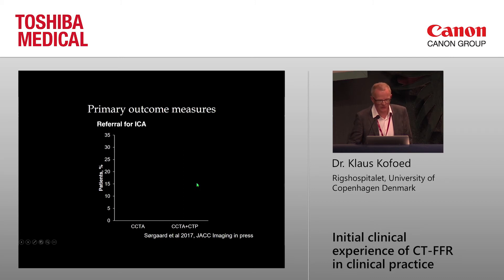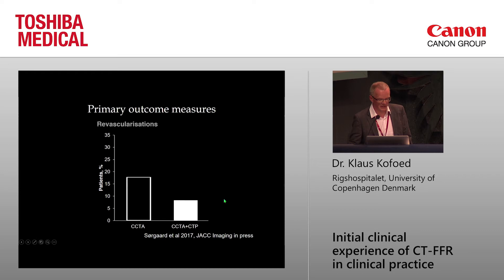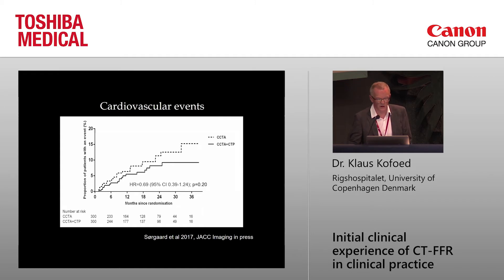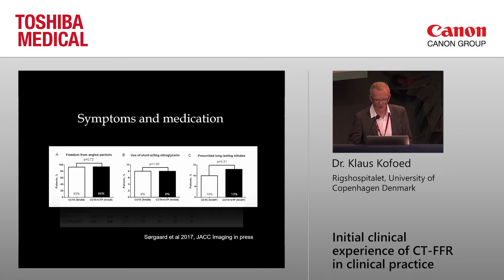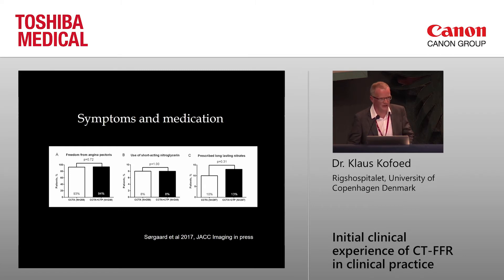These are the primary outcome measures of the study. First, referral for invasive cath: adding CTP on top of CTA resulted in half the referrals for invasive cath. The revascularization rate also went down by half in patients who underwent CT perfusion. And most importantly — what was the clinical outcome? There was actually no difference. The cardiovascular event rate was the same, and the symptoms of patients were similar. So using CT perfusion, we were able to determine that patients did not need revascularization even though CT angiography showed more than 50 percent stenosis. CT perfusion imaging in this setting may be more helpful in the future.